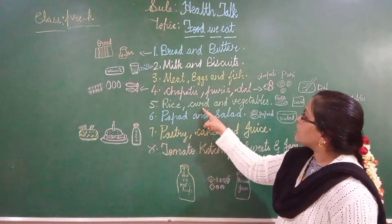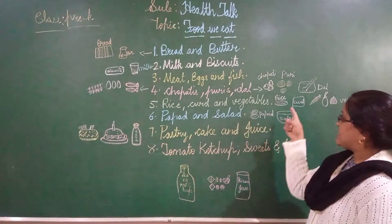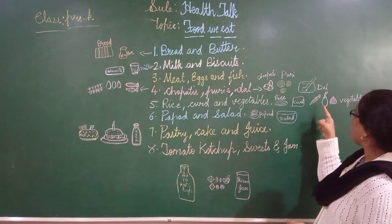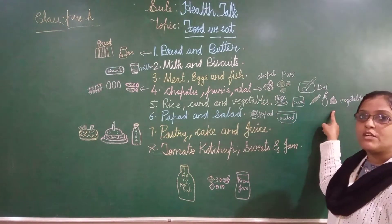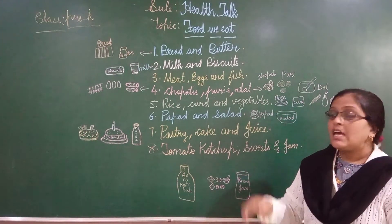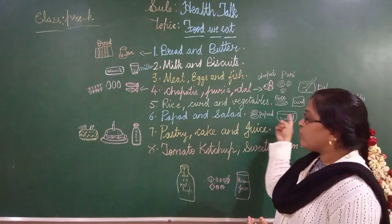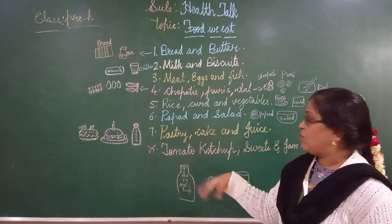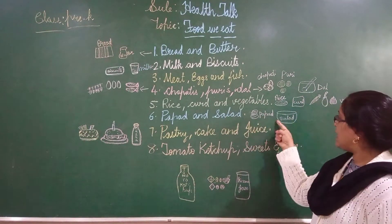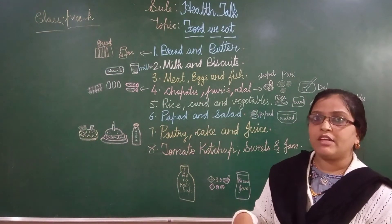Then rice, curd and vegetables. You know rice? Yes. Then curd. And what about vegetables? Vegetables — you need to have them too. Don't say you don't want vegetables. Each and every vegetable has different types of energy, so you need to have vegetables. Also papad and salad — salad is made with vegetables, you can have that, children.